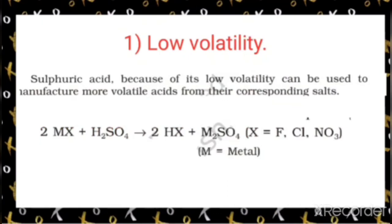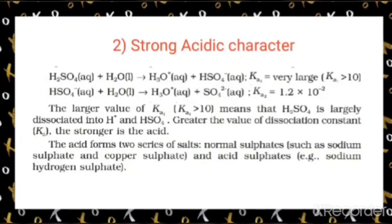Regarding chemical properties: because of its low volatility, sulfuric acid can be used in the manufacture of more volatile acids from their corresponding salts. The reaction is: MX + H₂SO₄ → HX + M₂SO₄, where M is the metal and X can be fluorine or a nitrate compound.